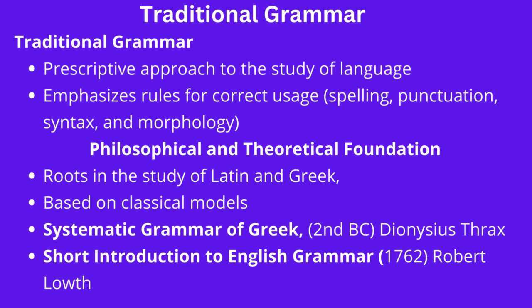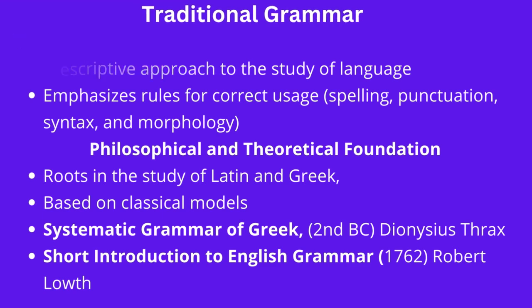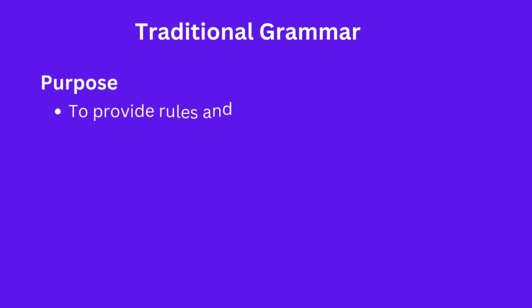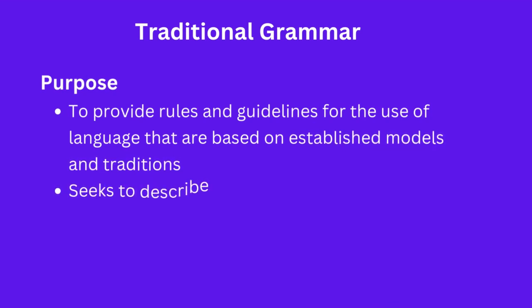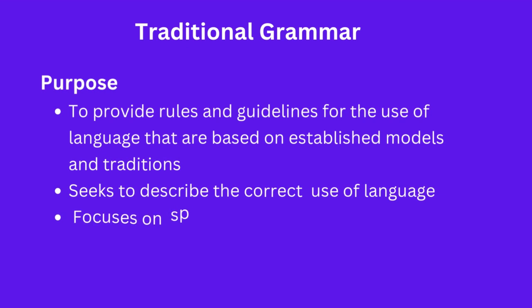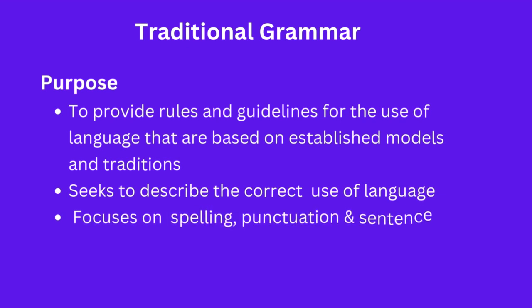The basic purpose of traditional grammar is to write something that is systematically and grammatically correct. As mentioned, the purpose of traditional grammar is to provide rules and guidelines for the use of language. These rules are based on established models and tradition. Traditional grammar seeks to describe the correct usage of language and often focuses on issues such as spelling, punctuation, and sentence structure. The basic purpose was to achieve a uniform form of language for written or spoken purposes.